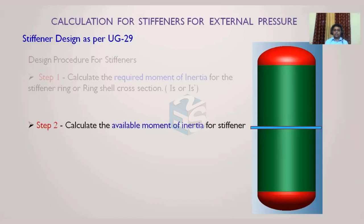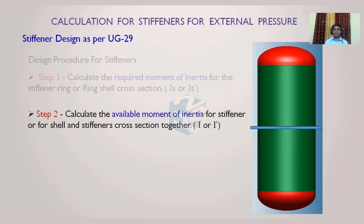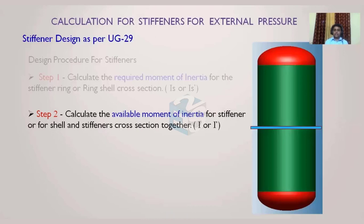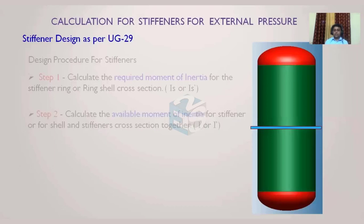The first requirement is to calculate the required moment of inertia at that junction. Then we have to calculate the available moment of inertia. If we are using only the ring, then I is the moment of inertia of that ring section which we need to calculate. If we are also taking the credit of the shell section contributing to the moment of inertia, then we have to calculate I', which is the available moment of inertia in the shell and stiffener ring cross section together.